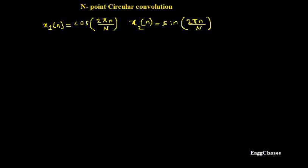Welcome to NG Classes YouTube channel. In this video we will consider the concept of finding N-point circular convolution of two sequences. The two sequences are x1(n) = cos(2πn/N) and x2(n) = sin(2πn/N). The task is to find the N-point circular convolution of these two sequences, which can be solved using the time domain approach or the frequency domain approach.